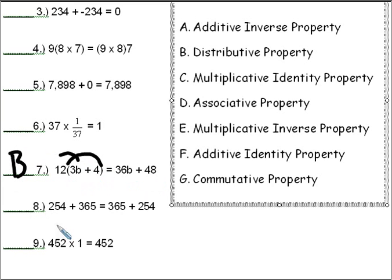And number 8, what we're doing is we're just changing the order of the terms. When we change the order of the terms, that is called the associative property, letter D.